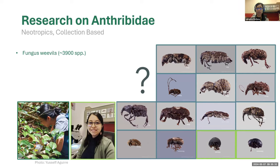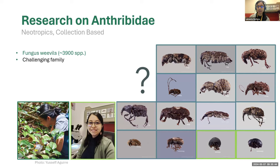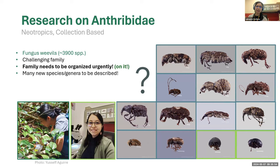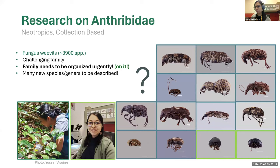There are over 3,000 species, almost 4,000. This is a very challenging family because it's very diverse. There are a lot of opinions about the classification, and the family needs to be organized urgently. I'm working on it, at least for the neotropical groups. There are still many new species and genera to be described.